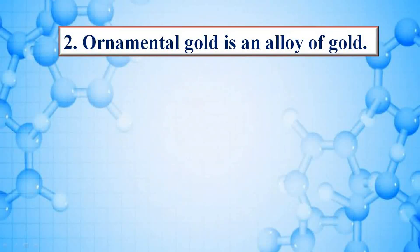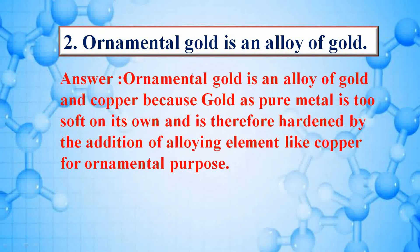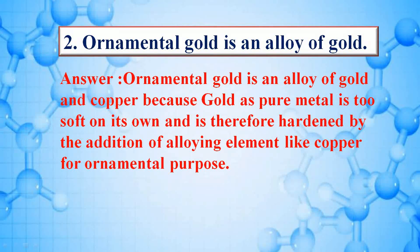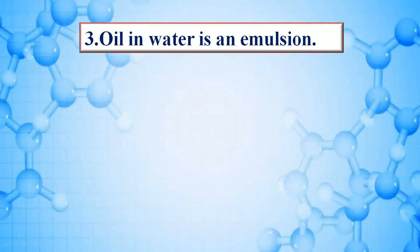Ornamental gold is an alloy of gold — answer is ornamental gold is an alloy of gold and copper because gold as a pure metal is too soft on its own, and it is therefore hardened by the addition of an alloying element like copper for ornamental purposes.